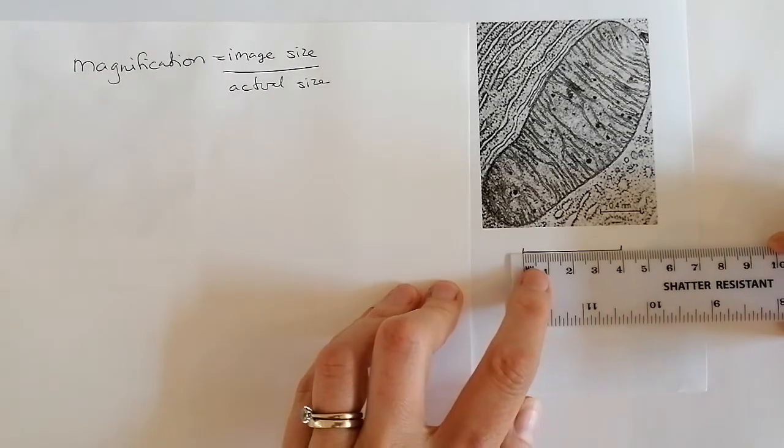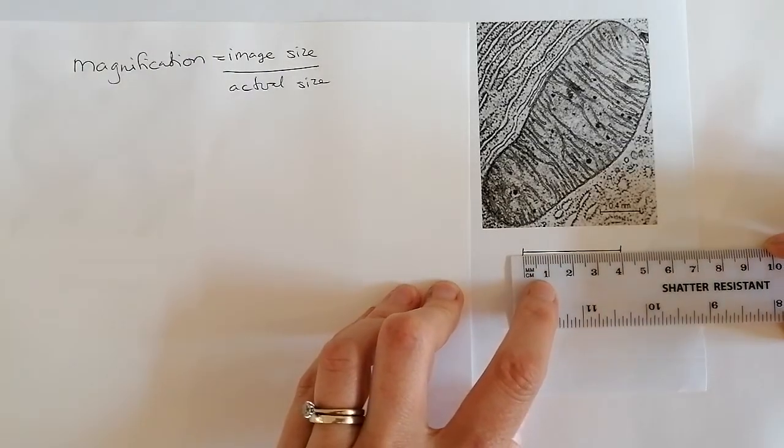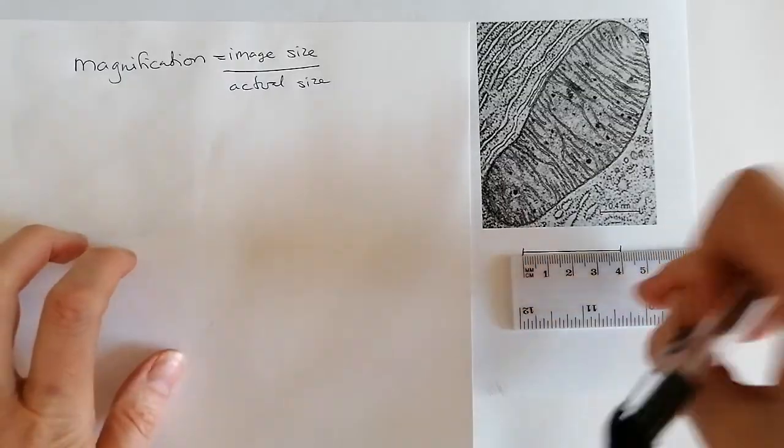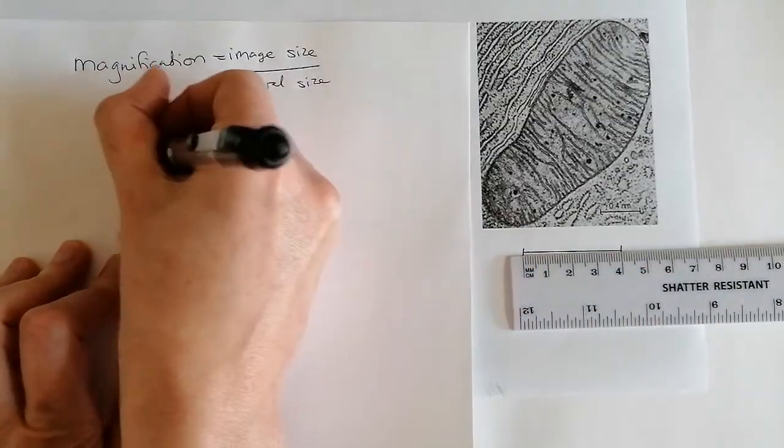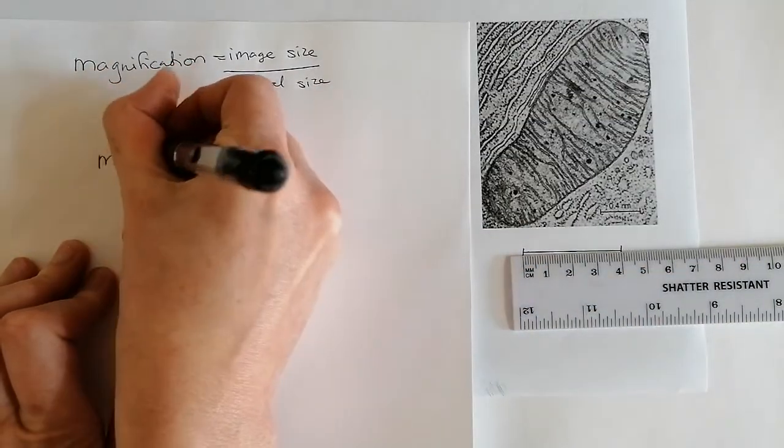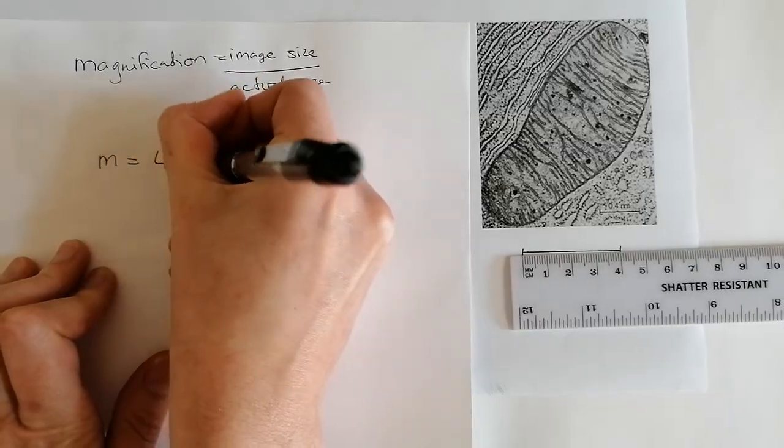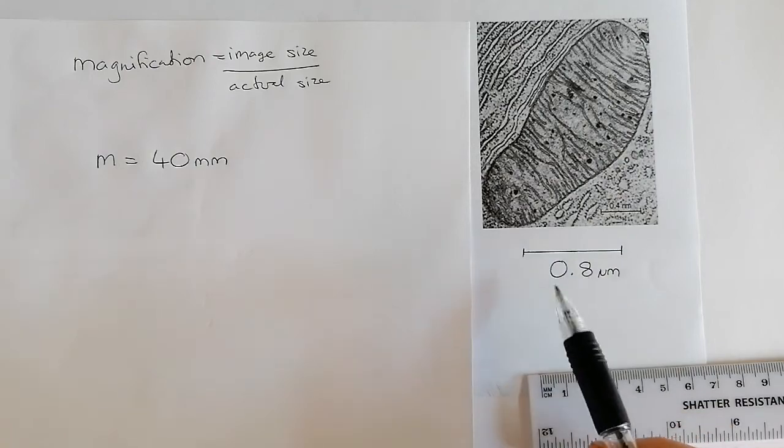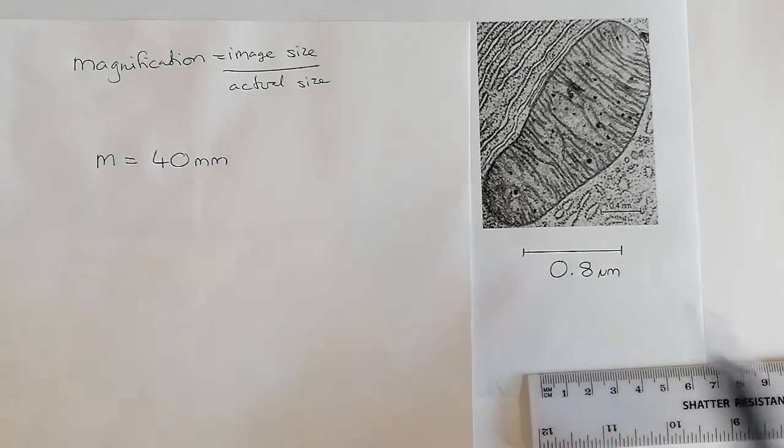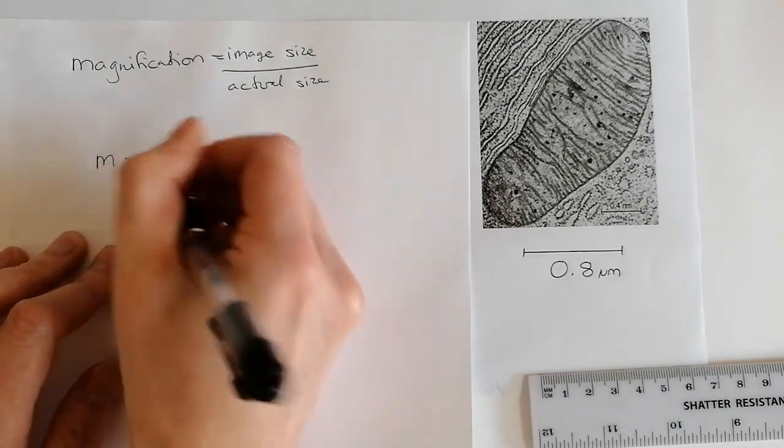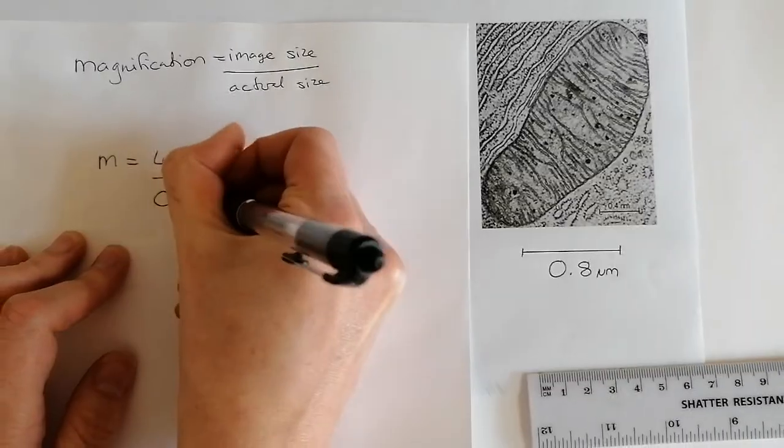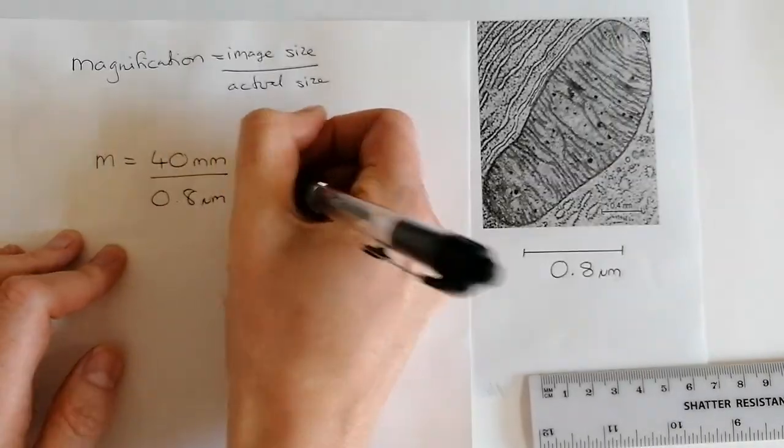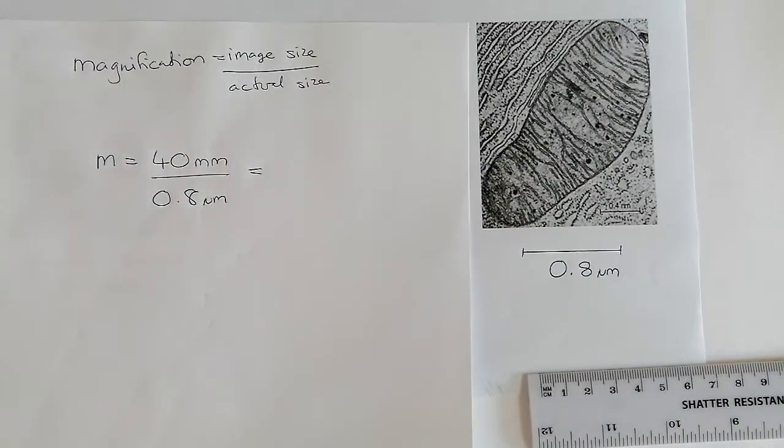We're going to measure how much we have got. So we've got 4 centimeters, which is 40 millimeters. So my M equals 40 millimeters divided by how much it actually said it was, which is 0.8. 0.8 micrometers equals whatever my magnification is.